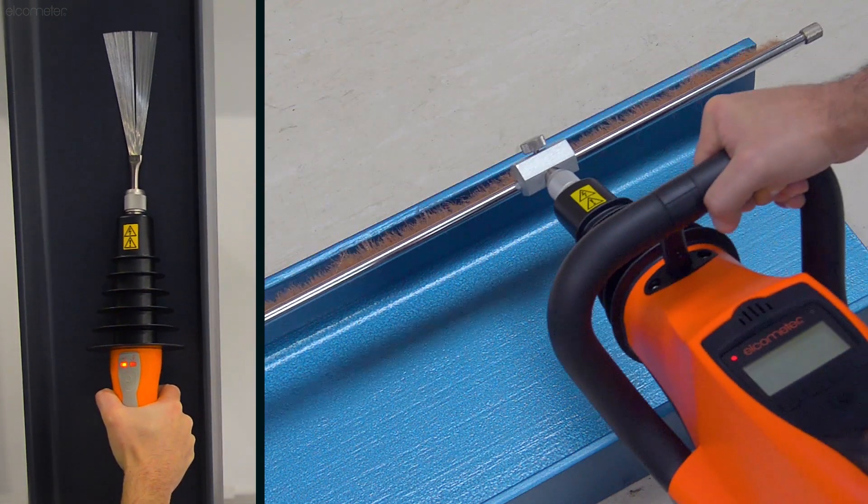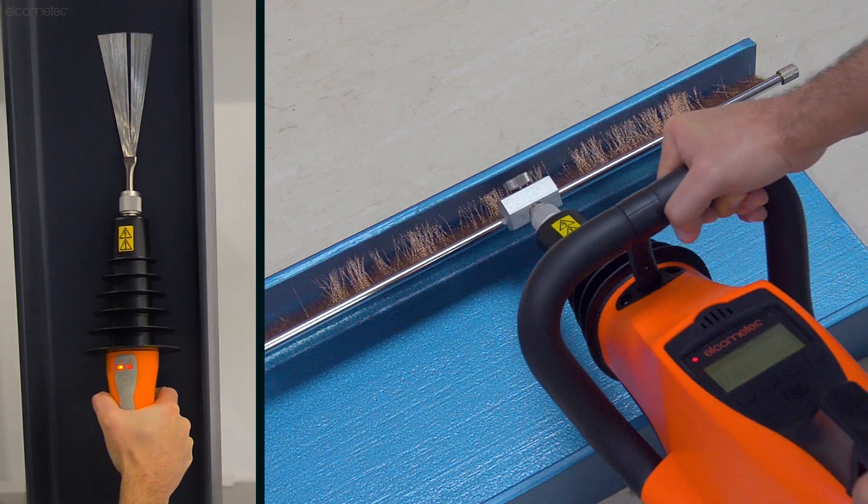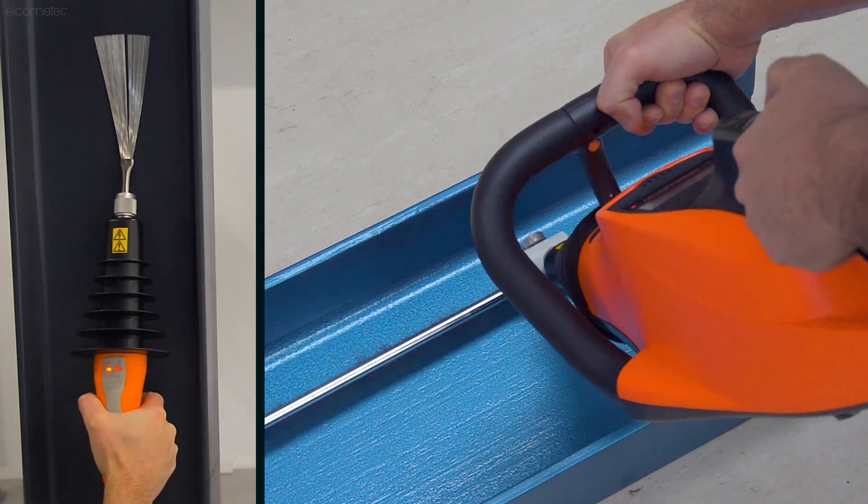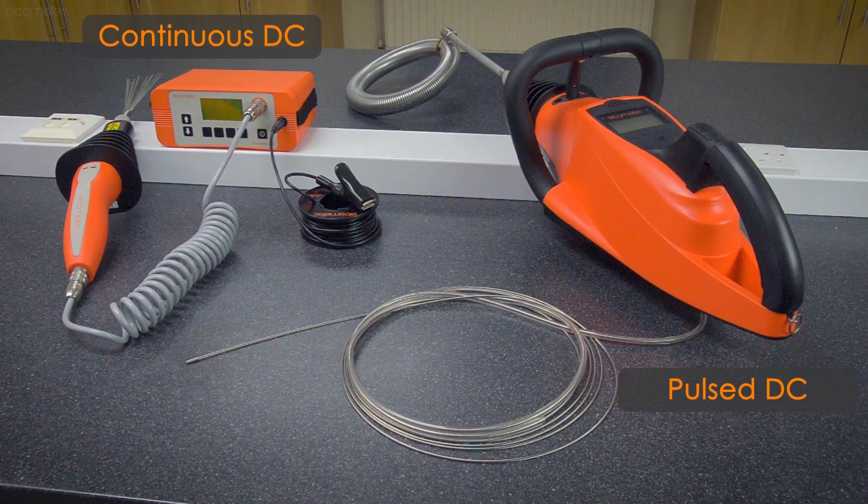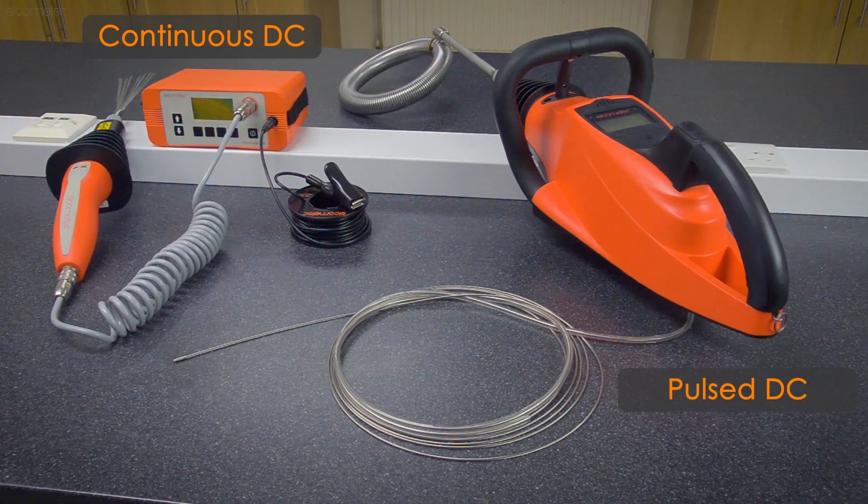There are essentially two high voltage direct current or DC technologies used for testing a coating's porosity: continuous DC and pulse DC. So, what's the difference?